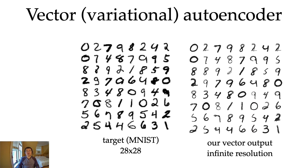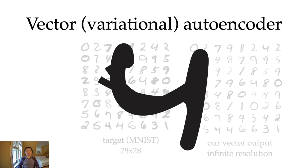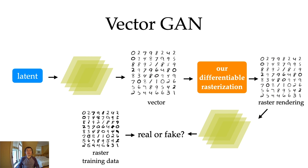So given the target raster images from MNIST, our network can output vector graphics like the one on the right. These vector graphics are infinite resolution compared to the target raster images. Alternatively, we can generate a generative adversarial network.